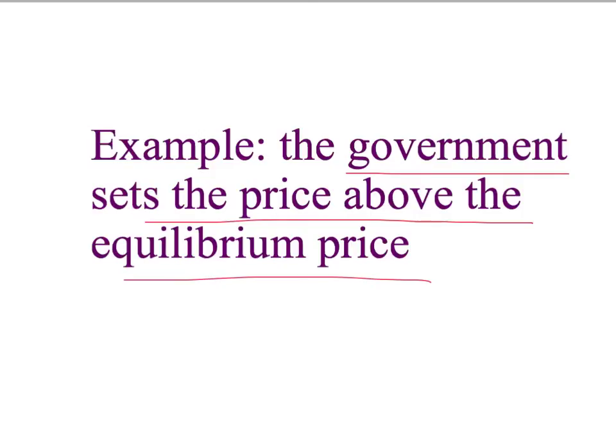For many years, Australia, the European Union, the United States, developing countries like India, have had governments intervene in agricultural markets and set the prices of agricultural products, such as milk, onions, potatoes, and so on, above the market clearing level. Often, the stated aim and objective of these policies is to help farmers. But what's the real outcome? Let's look.